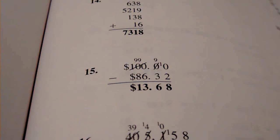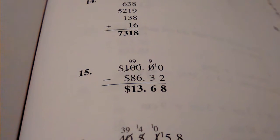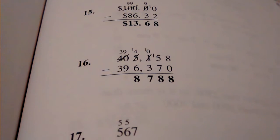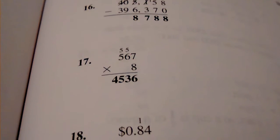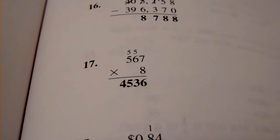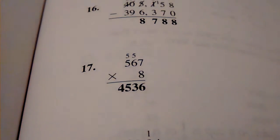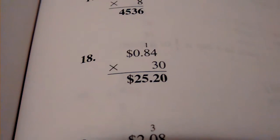Number 15, $13.68. Number 16, $8,788. Number 17, $44,536.